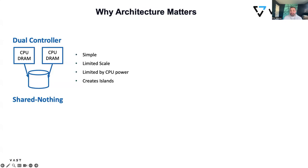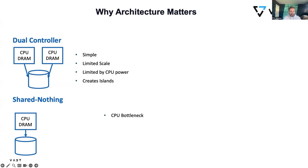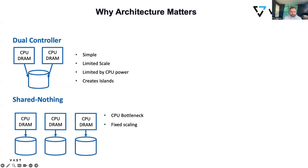That's why we saw the introduction of the shared nothing, or scale-out architecture. Here I've got a CPU, some memory, and a pool of disk — that pool of disk is owned by that single controller, so ultimately that becomes the bottleneck. I can only process so much data through that controller. I also have fixed scaling — I need to scale in fixed increments with the same blend of CPU, memory, networking, and disks. While I'm scaling resources linearly as the system grows, I'm not really scaling performance, because as I add more nodes I have more east-west traffic and inter-node communication.